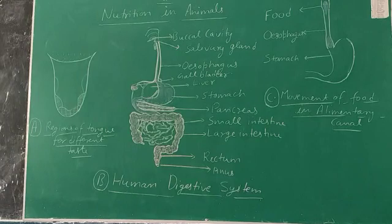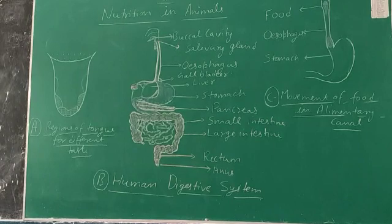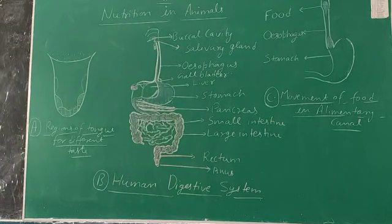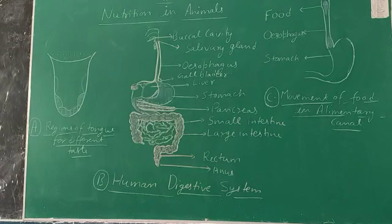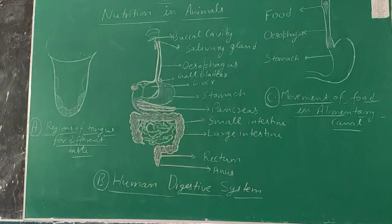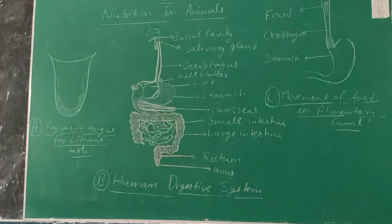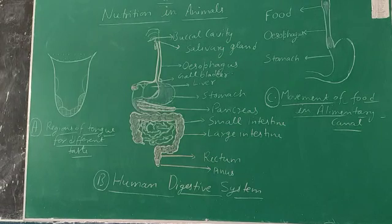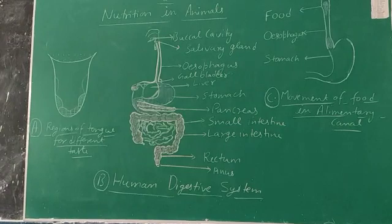Next, we move on to the movement of food in the alimentary canal. Whatever food we eat is chewed by the teeth and mixed with saliva inside the buccal cavity. Saliva is secreted by the salivary glands, and the food gets thoroughly mixed with it inside the buccal cavity.